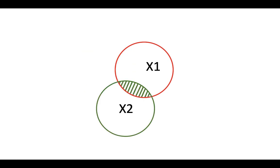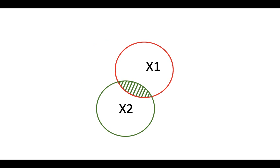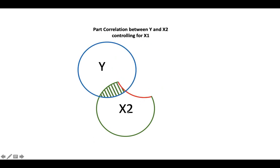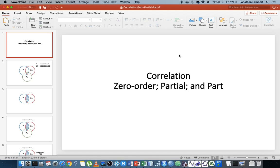We could do the same thing with x2: remove the effect of x1 from x2, which leaves us with the x2 residuals, and then correlate that with y. This gives us the part correlation between y and x2.